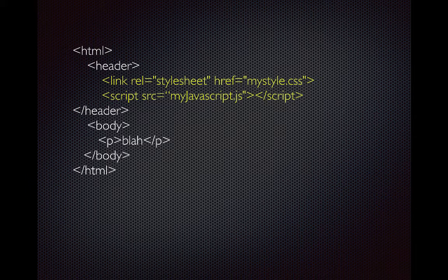Best practice is to write JavaScript in a separate file with a .js extension. For example, let's say you have a file called myJavaScript.js — you write your JavaScript inside that file and save it. Then in your HTML page you include that JavaScript file as a reference, which usually goes in the header section. You can see here there are two references: one to a CSS file and a second one to myJavaScript.js.